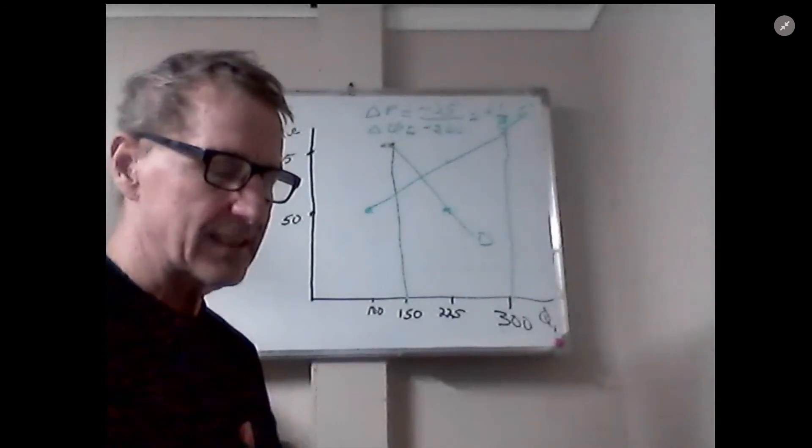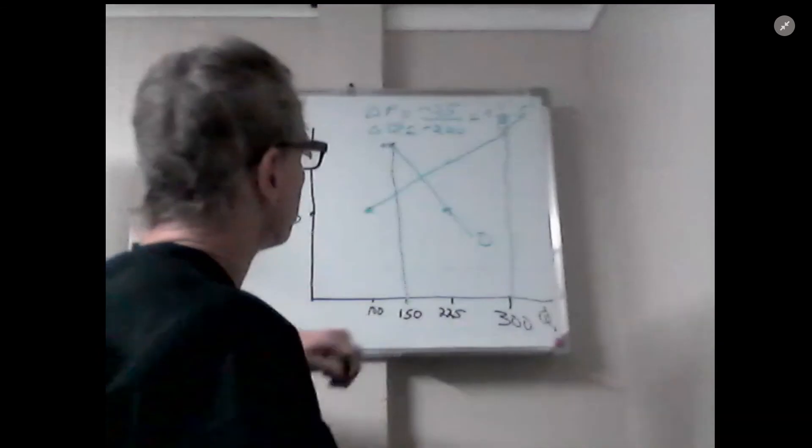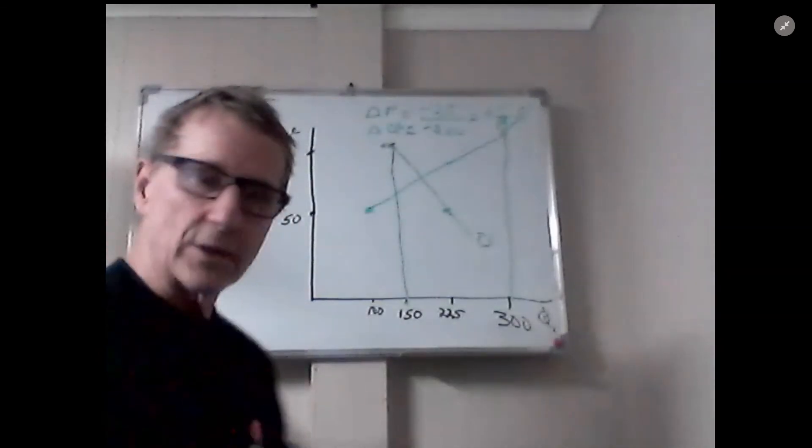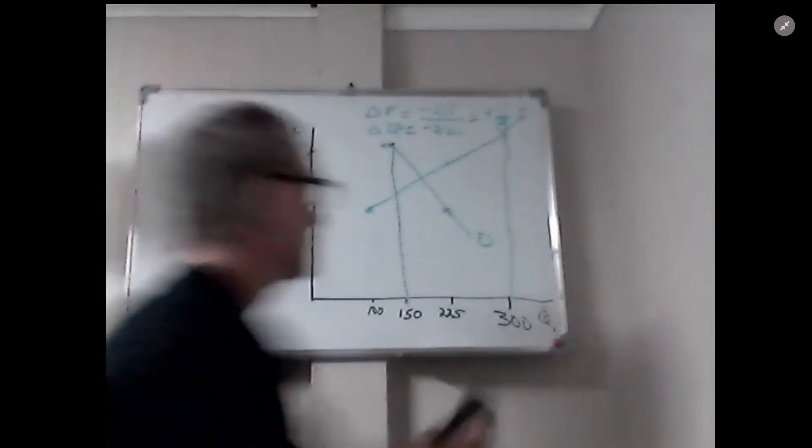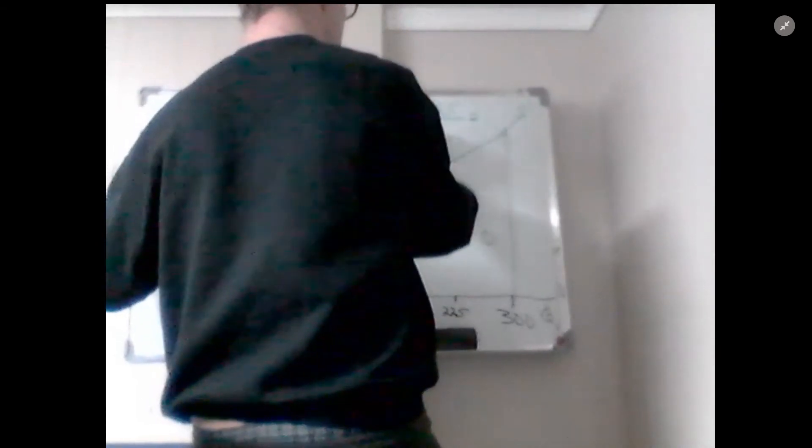Now we can do the same thing with demand. I'm just going to erase this piece here. Delta QD is +75, so the slope is -1/3.